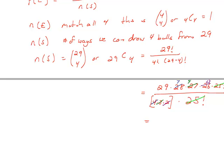And 2 goes into 26, leaving us with 13. So the number in our sample space is 29 times 7 times 9 times 13.